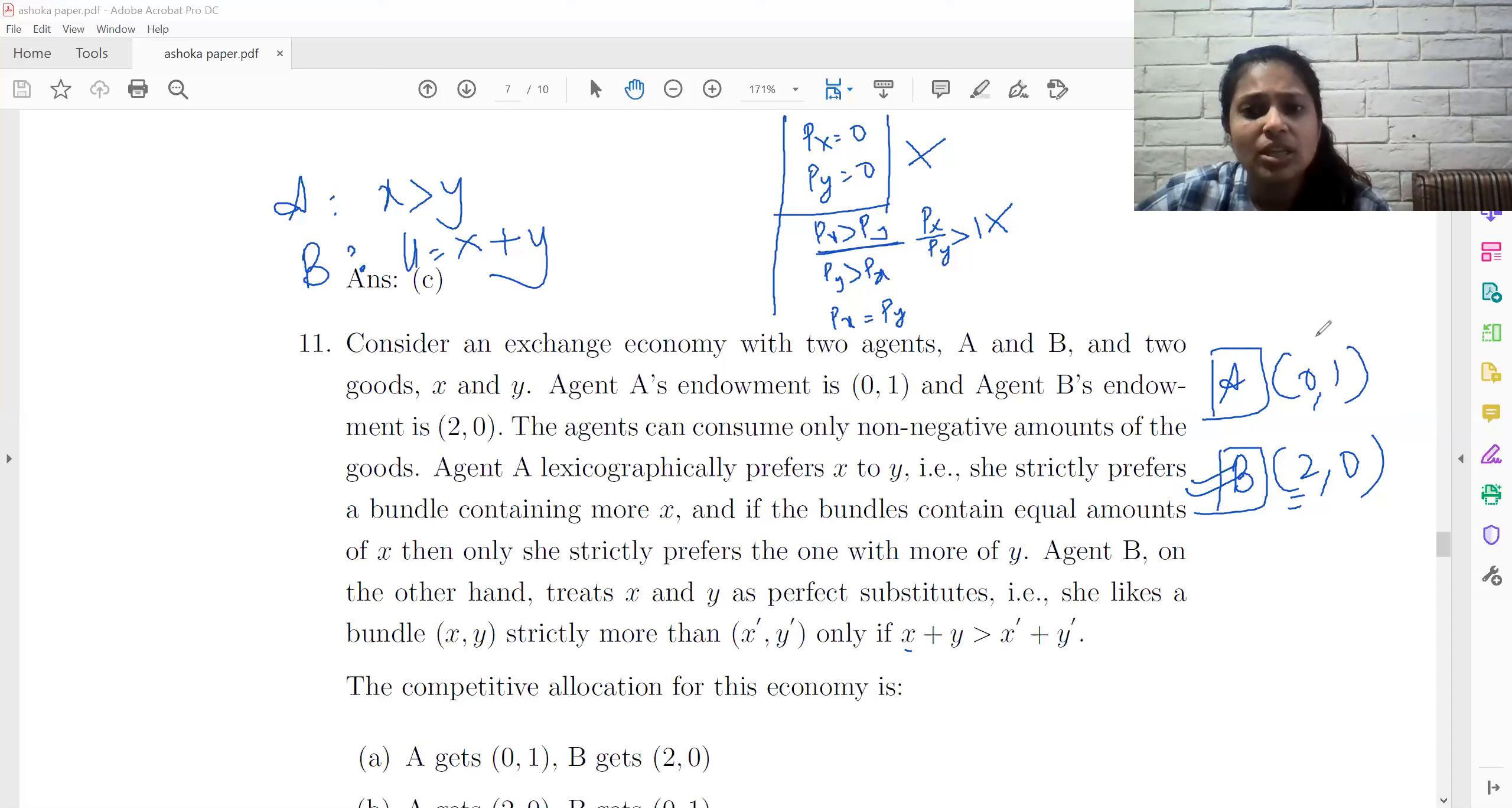but agent A will want to trade because if X is a cheaper good, then he would want to give away his one unit of Y and get more than one unit of X. But agent B will not trade with him. So this exchange will again not be possible. So PY more than PX is also not possible.